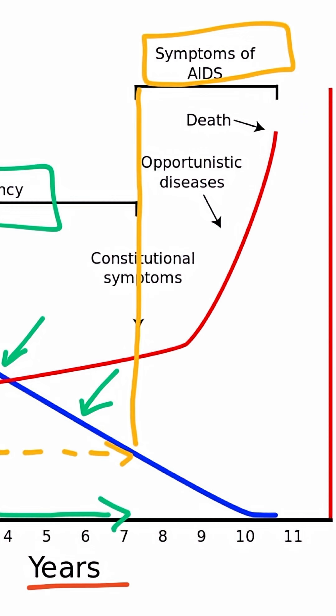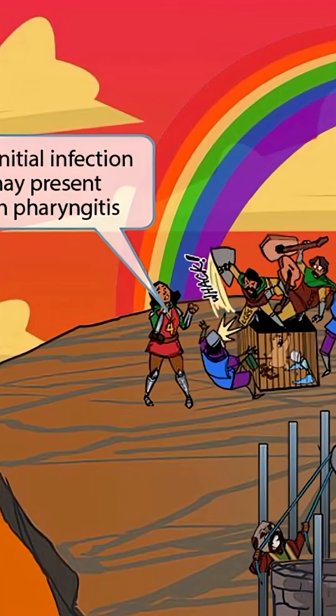Now that you understand this conceptually, let's return to the image mnemonic to help you memorize these details. As you can see, we've added another servant helper person with a number 4 on her shirt, which is our symbol for the CD4 cell.